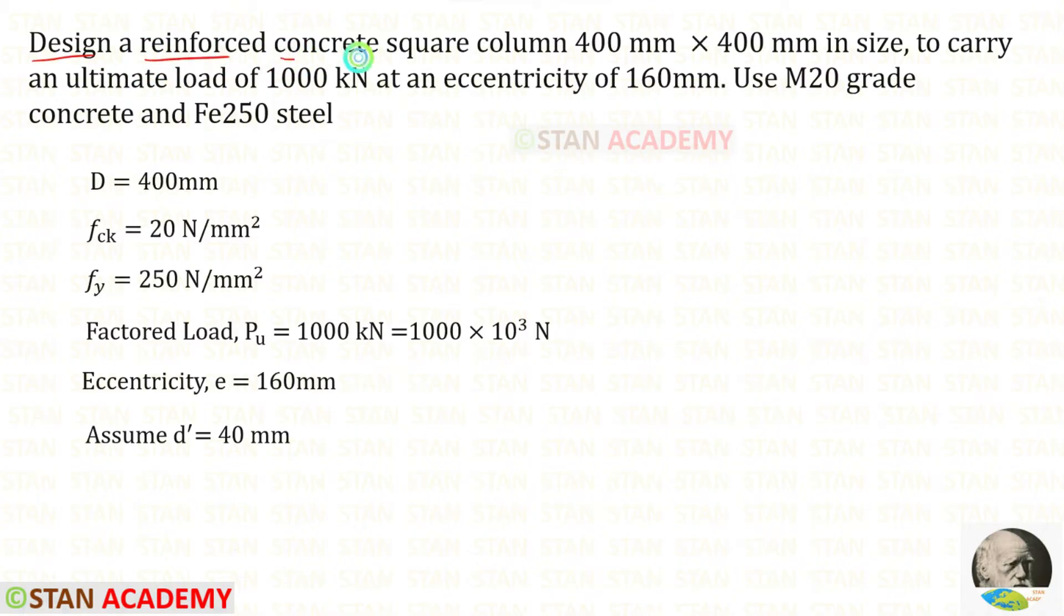Design a reinforced concrete square column 400 millimeter by 400 millimeter in size. The size d is given as 400 millimeter to carry an ultimate load of 1000 kilonewton.